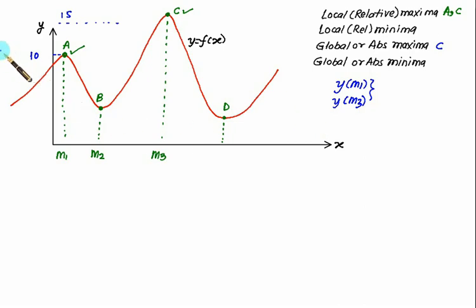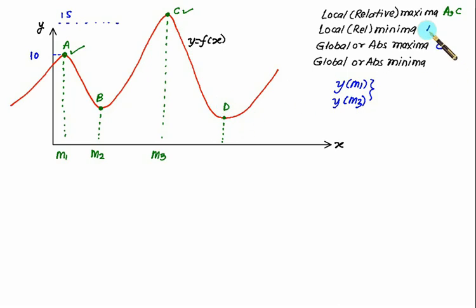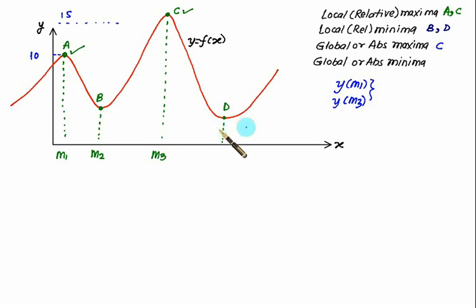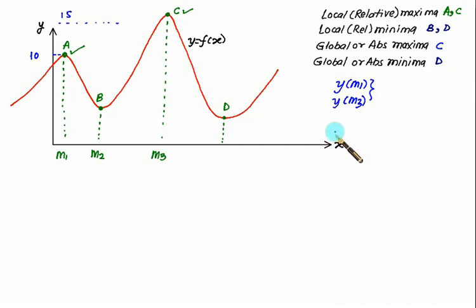The same thing is true for minima. In case of local minima, we have two minima: point b and point d. Both b and d are local minima. Out of these two, point d is lower than point b, so d will be called the absolute or global minima.